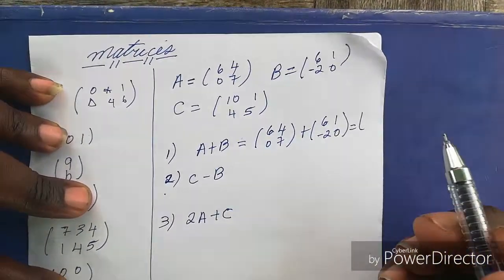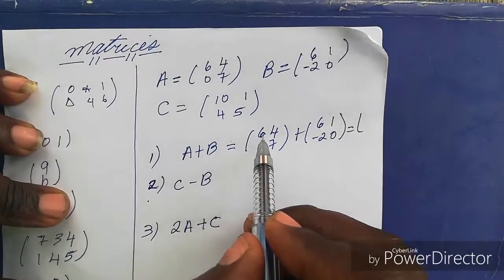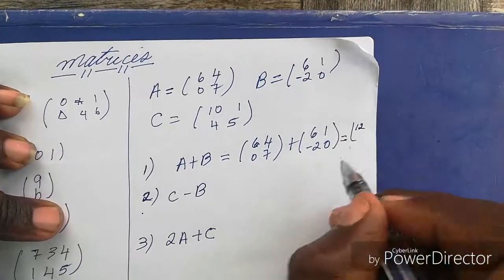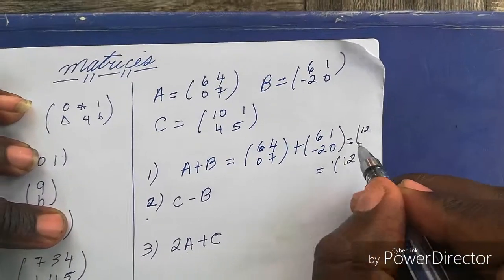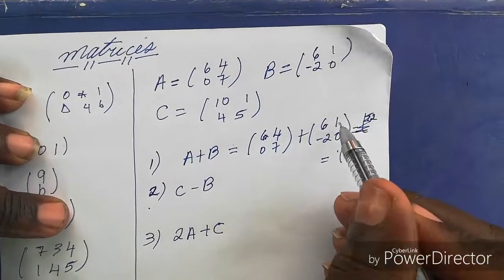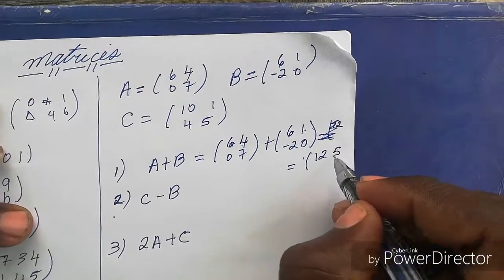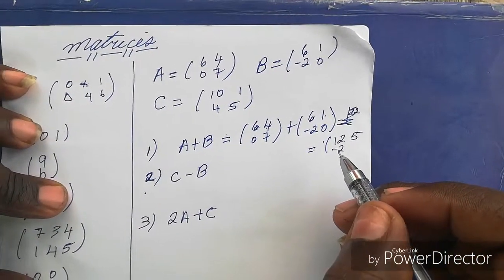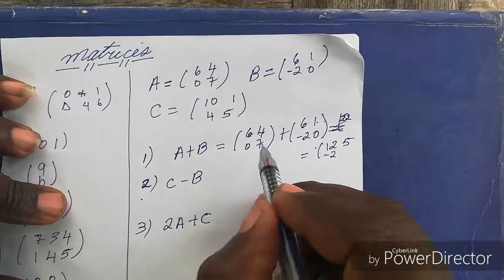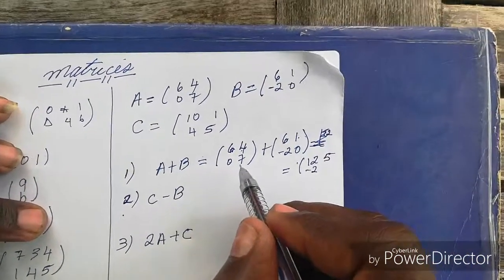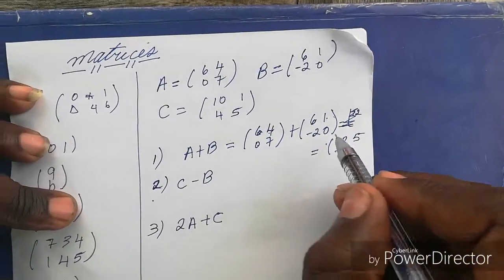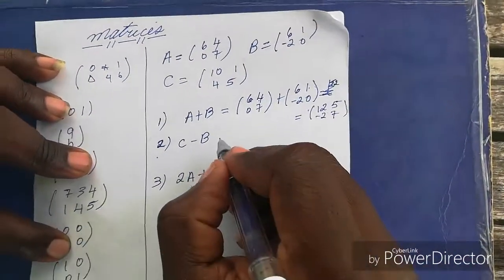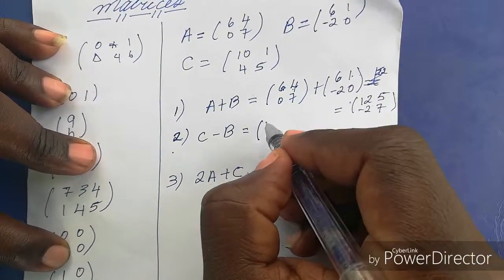For addition and subtraction, we just look at the place value that numbers are and you operate them. This is the first number in the first matrix, that's the first number, so I add them: six plus six I get 12. Second number: one plus four I get 5. Zero minus two, minus two. And seven plus zero is seven. So for addition and subtraction, they follow the same principle, just that instead of adding we're going to be subtracting.